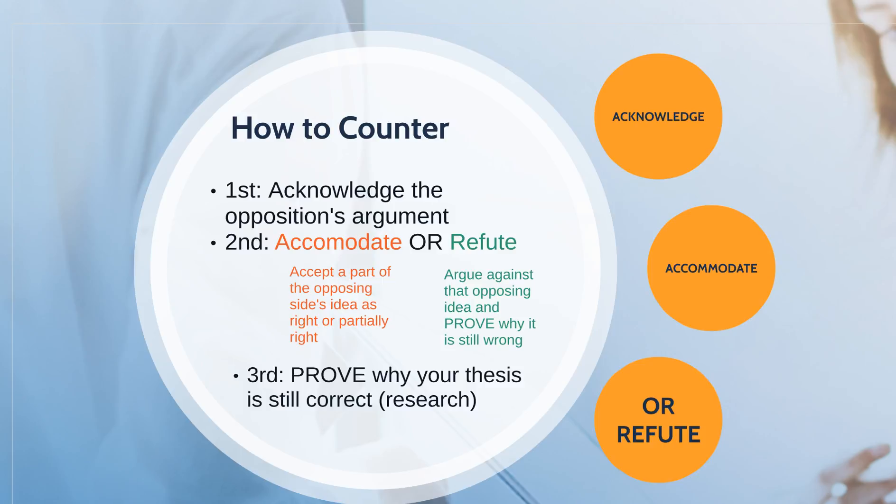What I would generally do when trying to figure out a counterargument is: first, figure out all the supporting reasons that the opposition would make, then select the strongest one — the one where they could say why my opinion is wrong. Then I'll start structuring a body paragraph in which I acknowledge that opposing side exists, and I'm going to either accommodate or refute that idea.